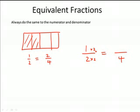If I multiply the bottom by 2, I have to multiply the top by 2. So quite simply, that's two quarters.